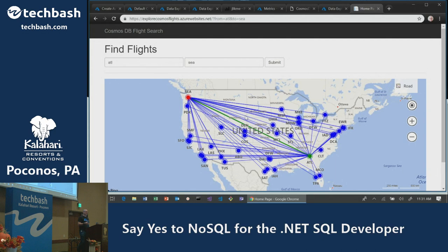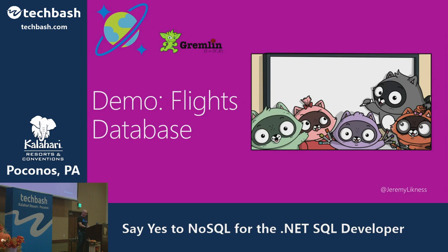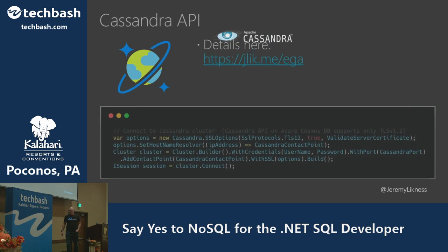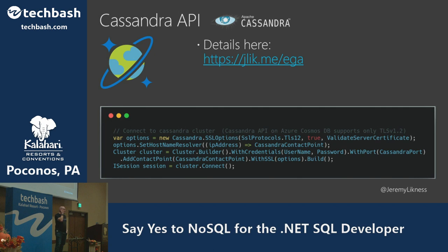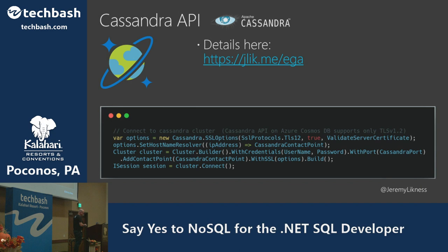The key here is I'm not trying to make anyone an expert in graph or document, but I want you to see what's possible and have applications with examples to work from. The other interface is Cassandra — I'm working with team members to build demos for this one. We're using the Cassandra driver to connect to Cosmos DB, the same pattern as MongoDB: take existing applications and manage them through Cosmos DB using the interfaces you're familiar with.